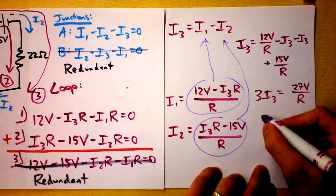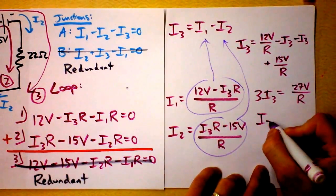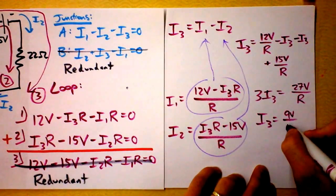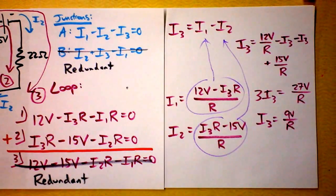And then if you want I3, it's really just 9 volts over R. Okay, beautiful.